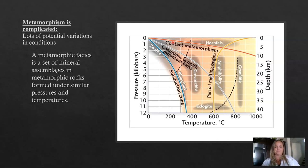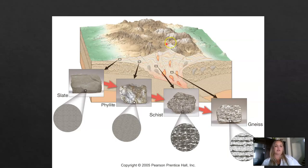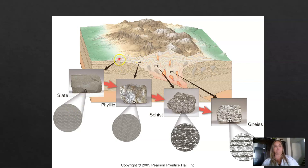Here are the four foliated metamorphic rocks — slate, phyllite, schist, and gneiss — and where they would be found in the crust during a continental-continental collision. Slate would be closest to the surface, then phyllite, then schist, and then gneiss at the greatest depth. You can see that the crystals are vastly different — much finer grained in slate versus gneiss.